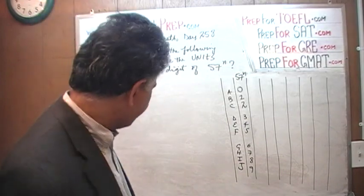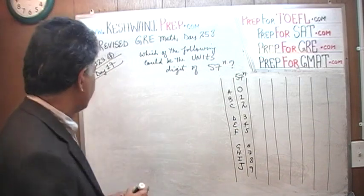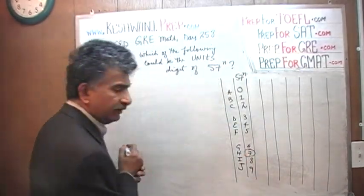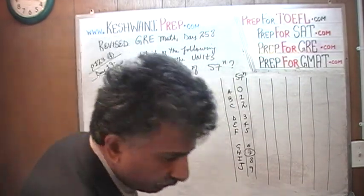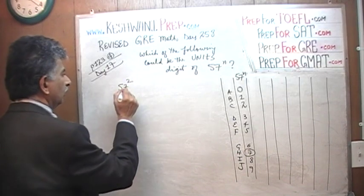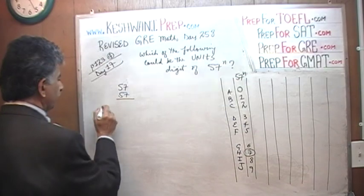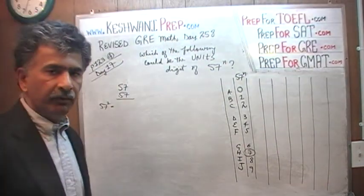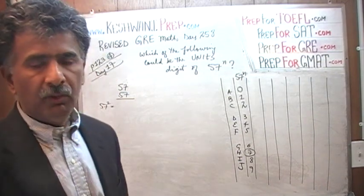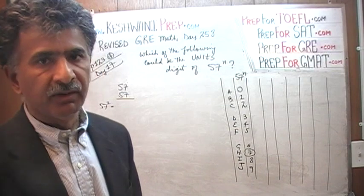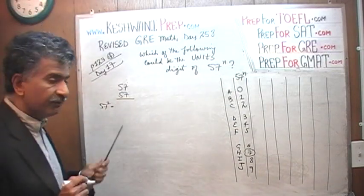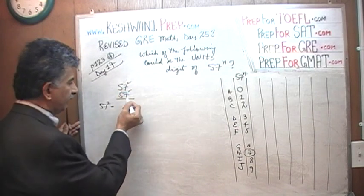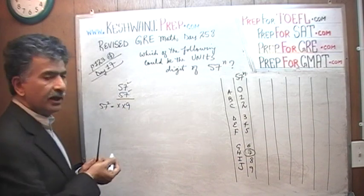The key is to understand that they are asking us only for the unit digits. We are not interested in what 57 times 57 actually equals. For example, 57 raised to 1 ends in a 7. For 57 raised to 2, which is 57 times 57, we only care that 7 times 7 is 49 — it's going to end in a 9.